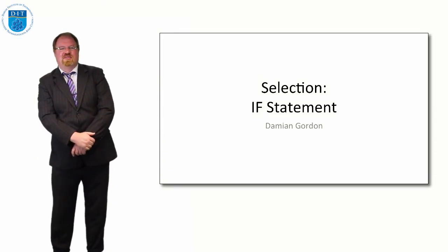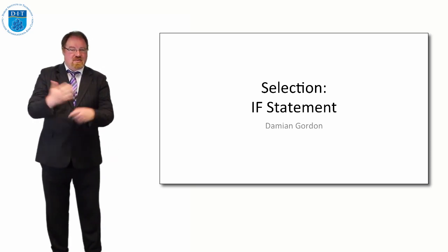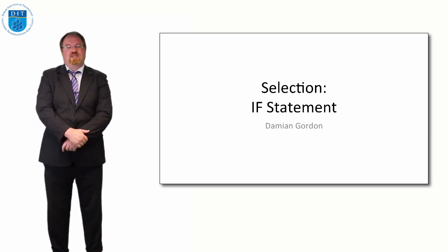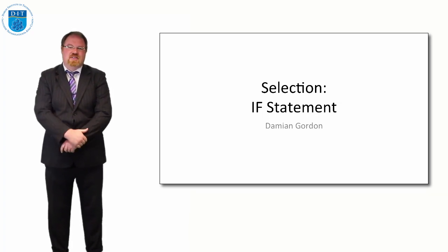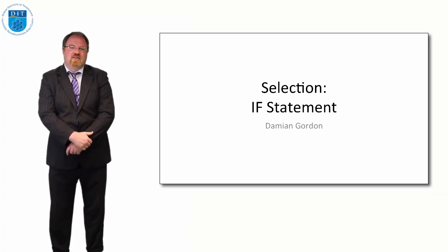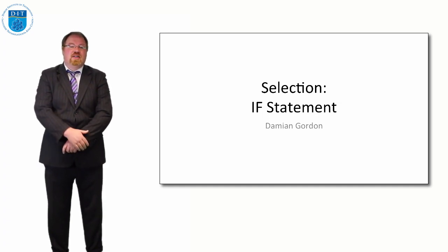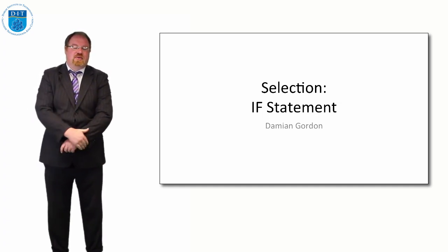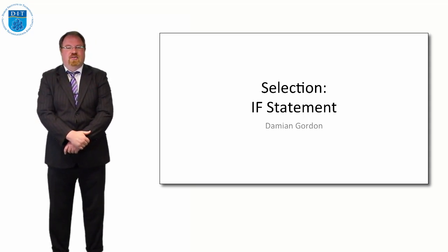Hello everybody and welcome to this episode of programming and algorithms. In this episode we're going to look at selection and in particular how selection is implemented using the if statement. The if statement is the most commonly used approach to implement selection, and selection is exactly what it sounds like — it's where we give the user a choice, where we build into the program the ability to pick one option or the other.